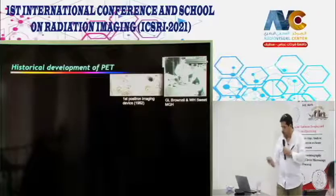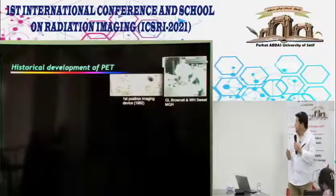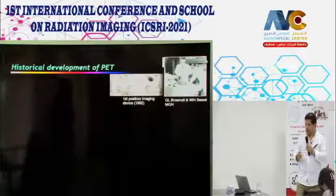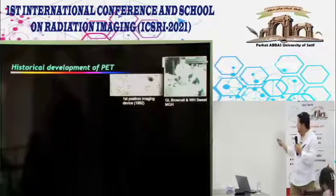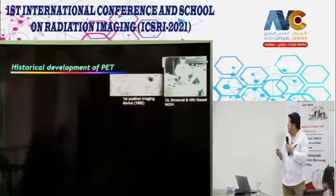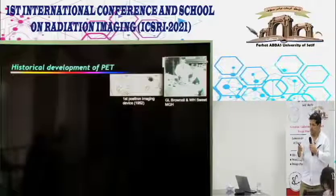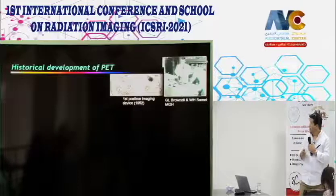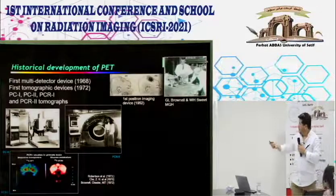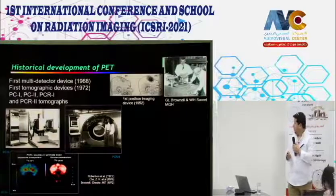PET history: in 1952, Brownell, Sweet, and colleagues at Massachusetts General Hospital in Boston were the first to use a positron emission tracer for brain tumor imaging—collecting data in single-photon mode because no dedicated PET camera yet existed.